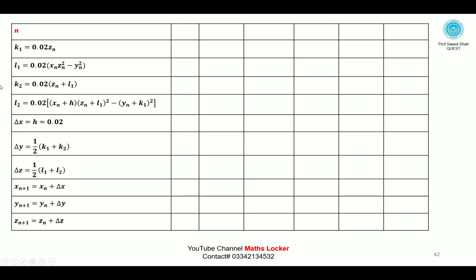Form the table with columns: k₁, l₁, k₂, l₂, Δx, Δy, Δz, xₙ₊₁ = xₙ + Δx, yₙ₊₁ = yₙ + Δy, zₙ₊₁ = zₙ + Δz. At the zeroth iteration there are no values of k₁, k₂, l₁, l₂, Δx, Δy, Δz. The starting point is x₀ = 0, y₀ = 1, z₀ = 0.